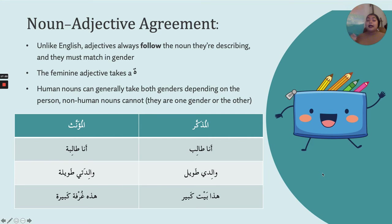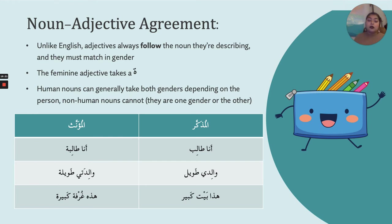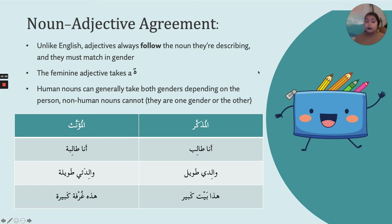Now let's talk about noun-adjective agreement. This is the structure where you have a noun — isim — followed by an adjective — sifa. Unlike English, in Arabic the noun comes first and then the adjective follows. For example, in English we say 'a tall person,' adjective first — but in Arabic the noun always comes first and the adjective follows. The adjective must also match the gender of the noun, as well as definiteness and number.